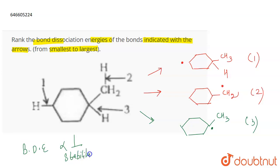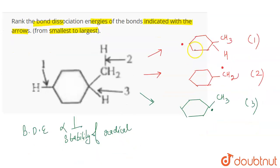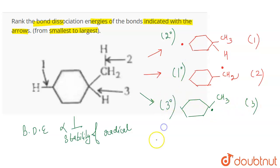Bond dissociation energy is inversely related to the stability of the radical. The first radical formed is a secondary (2°) radical. The second bond breaking gives a primary (1°) radical, and the third bond breaking gives a tertiary (3°) radical.